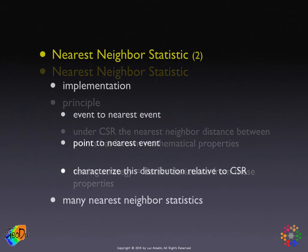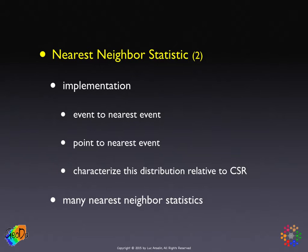So how do we implement this? We just compute these nearest distances and then characterize this distribution relative to what it would be under complete spatial randomness. Luckily, the characteristics of the homogeneous Poisson point process are such that we can have a specific mathematical expression for this. One thing to keep in mind is that there are many nearest neighbor statistics, because we need to characterize the distribution — we could take the minimum, maximum, average, or some measure of spread around the mean.